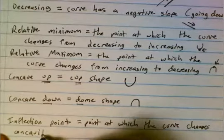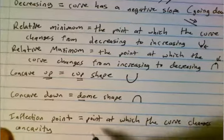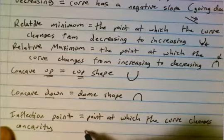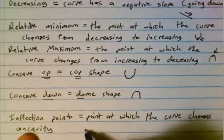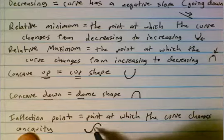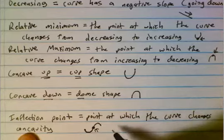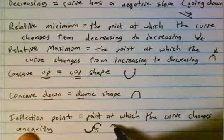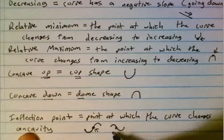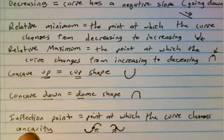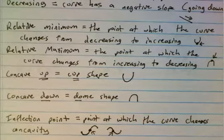The curve changes concavity — so it can either be from going concave up to concave down, or concave down to concave up. Either way, let's go back up and fill these in on the graph.